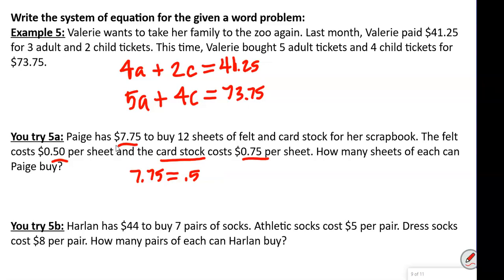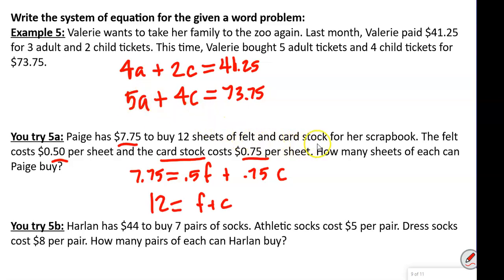So we've got 50 cents times felt plus 75 cents times cardstock — that's our first equation. Then it says she wants to buy 12 sheets total, so felt plus cardstock equals 12. That's our second equation.